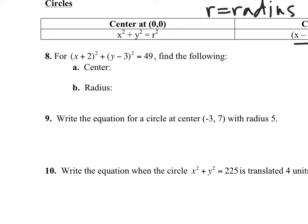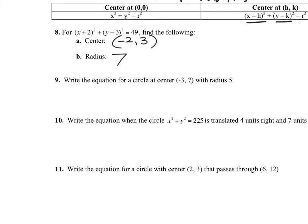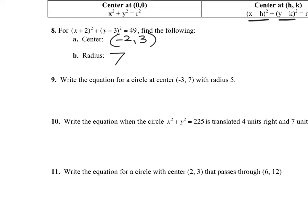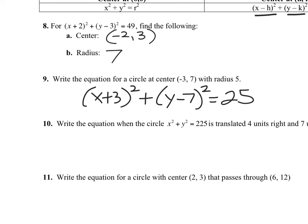Try identifying the circle: center is negative 2, positive 3, and the radius is 7. Perfect. Now write the equation of a circle — center and radius are given. Plug right into the formula: (x plus 3) squared plus (y minus 7) squared equals 25. Don't forget the squared signs and remember r squared equals 25. You guys are going to do so well on the circle parts.